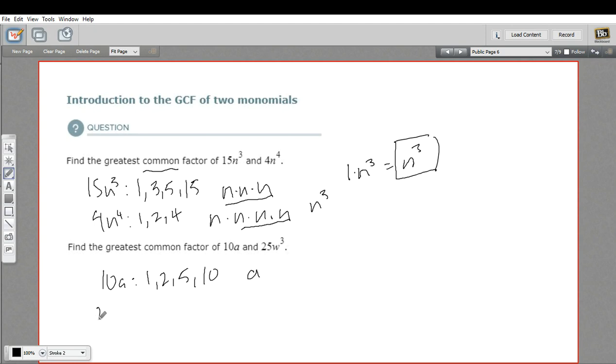And let's try 25w to the third. Factors of 25, we've got 1 and 25, and 5. And I think that's it. Let's do the w part here. W to the third is w times w times w.